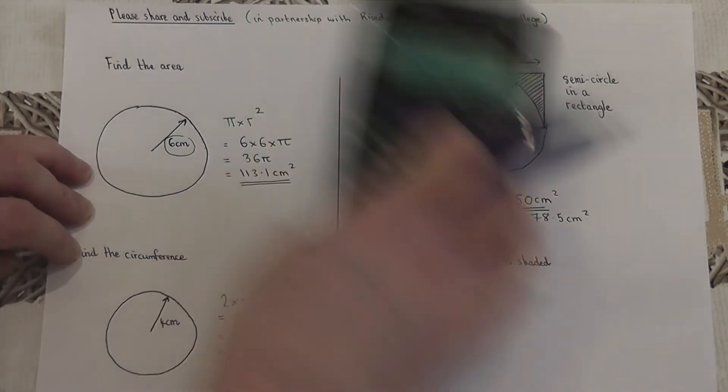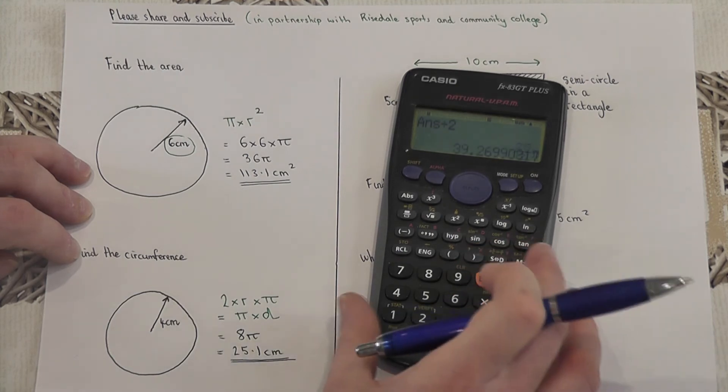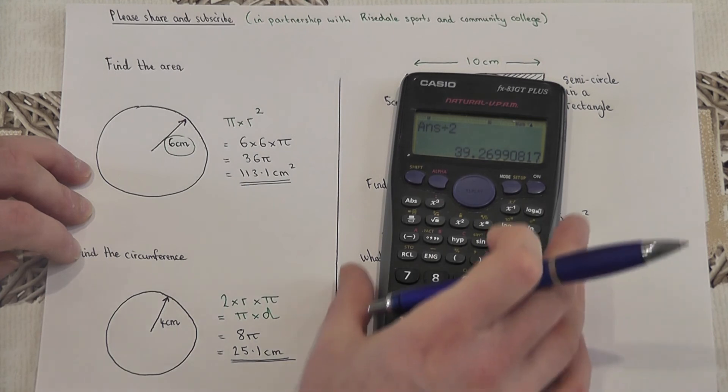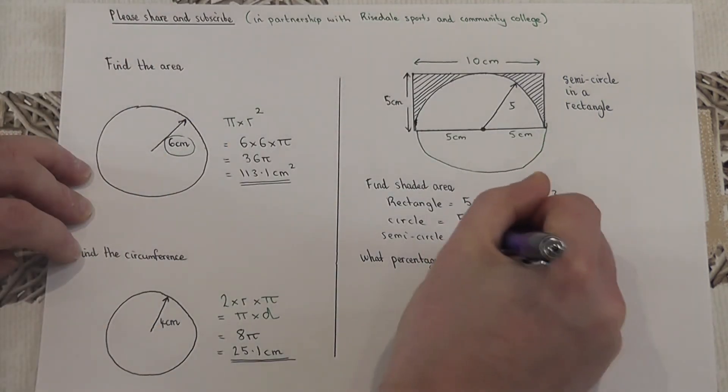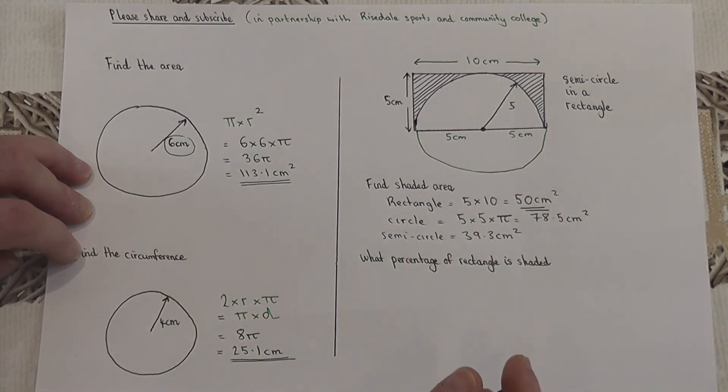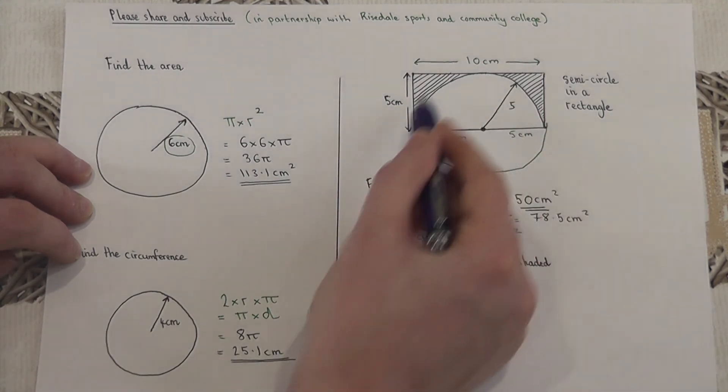So if I divide my area by 2, then I get 39.27, or 39.3 centimeters squared to one decimal place. So if I want to find the shaded area, I do the rectangle take away the semicircle.